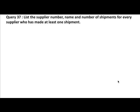Now that we've looked at joins, let's see what more we can do. Look at query number 37: list the supplier number, name, and number of shipments for every supplier who has made at least one shipment. We want the supplier number, name, and the count — for example, supplier S1 Smith 3, supplier S2 Jones 2, and so on.